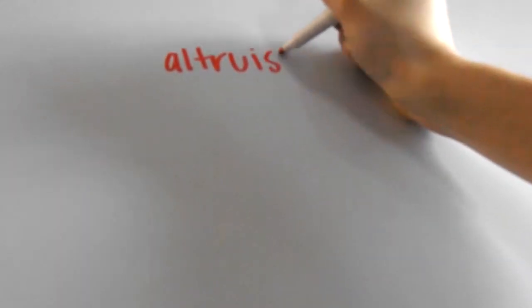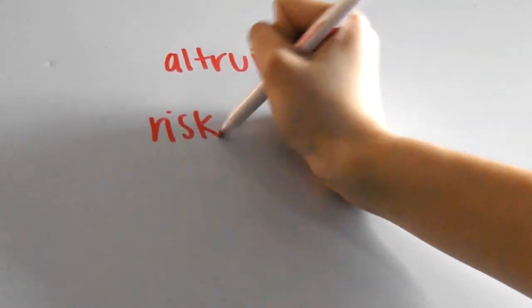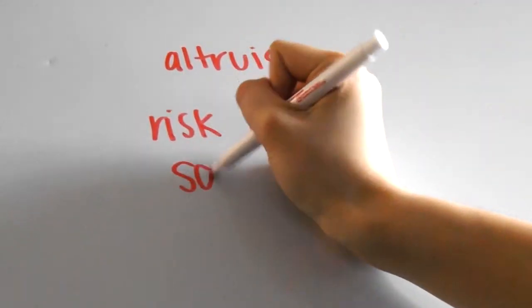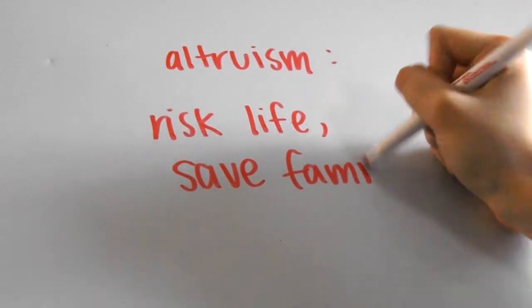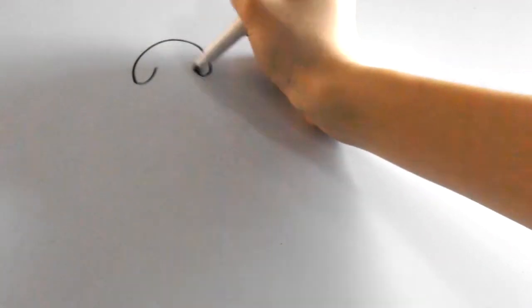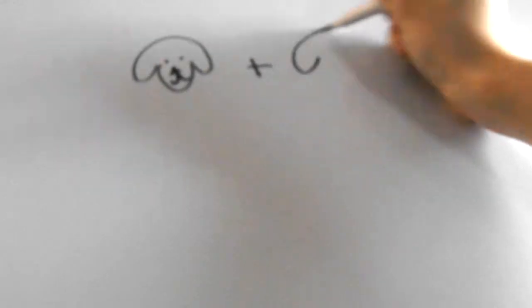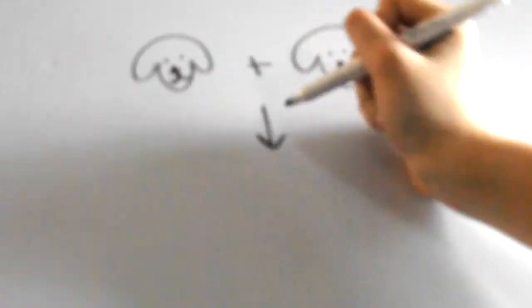Alright, moving on to altruism. This is basically when an individual risks its life in order to preserve the fitness of its family. In biology, we've seen that organisms reproduce in order to pass on their traits and keep their population from extinction.